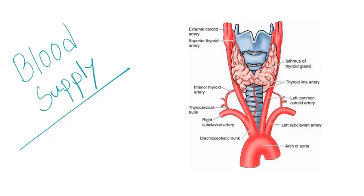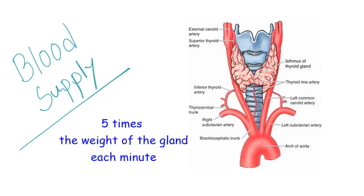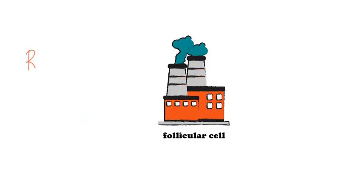Thyroid gland has profuse blood supply. The blood flow is about 5 times the weight of the gland each minute.